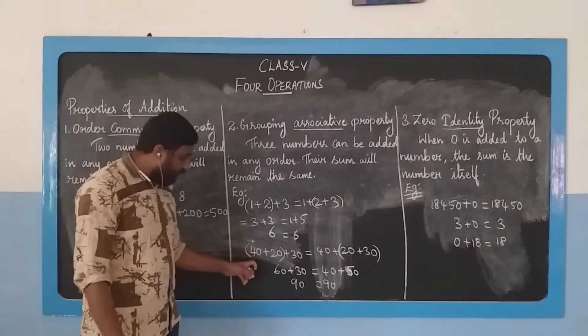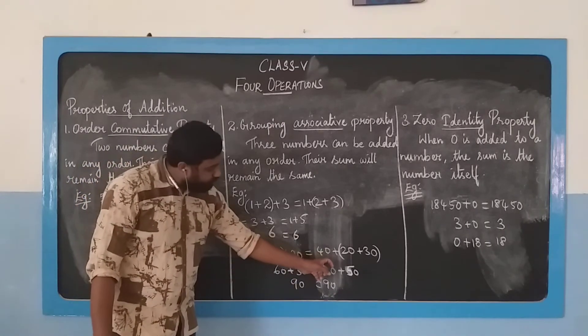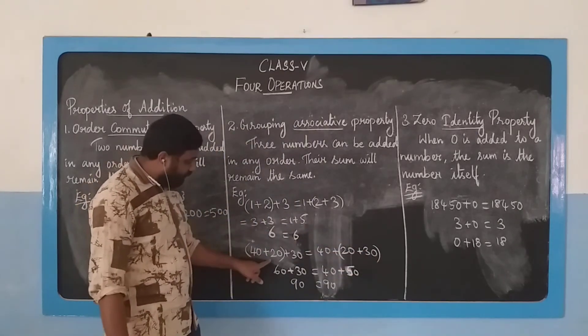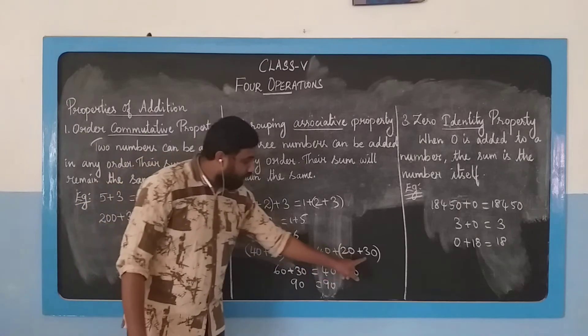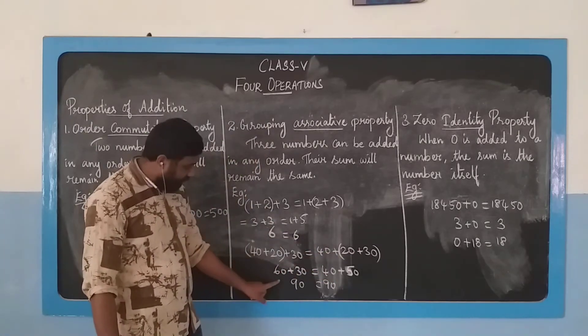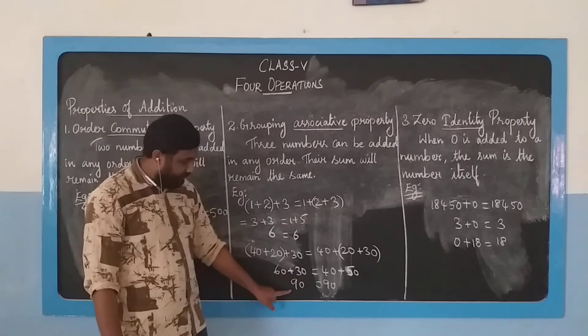Look at another example. Here we have 40 plus 20 plus 30. What is changed? Here the brackets are around the first two numbers. Here the brackets are around the last two numbers. What is 40 plus 20? It is 60, then plus 30. What is 60 plus 30? It is 90.